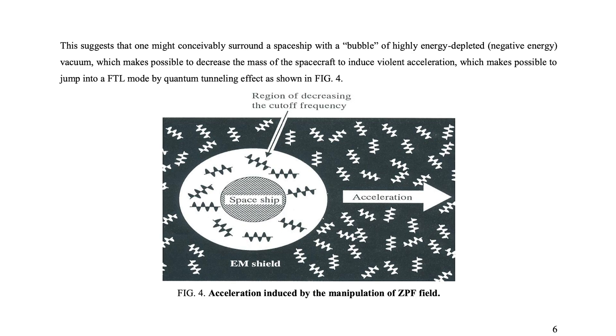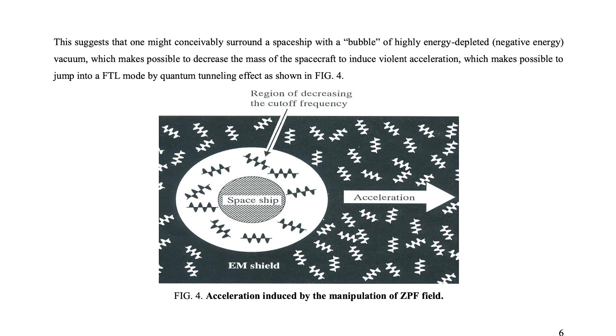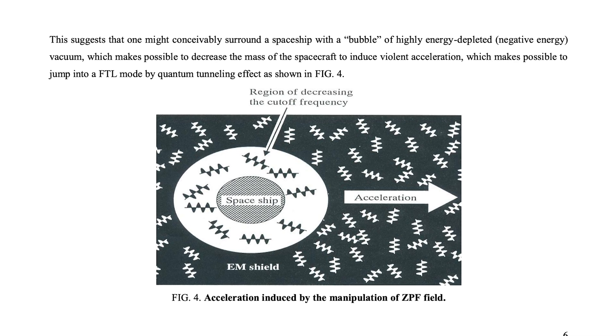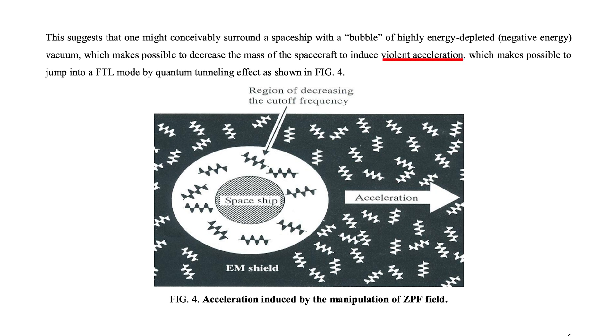So if we're not even close to accelerating a proton that fast, even thinking about accelerating an entire ship to that speed seems foolish. But Musha has some clever tricks of his own to get around this hurdle. He postulates that one could leverage the zero-point energy field to create negative energy, which would negate the mass of the ship. With zero or even negative mass, such violent accelerations required for tunneling past the light barrier would be possible. So again, as in the Alcubierre drive and stable wormholes, negative energy seems to be key.